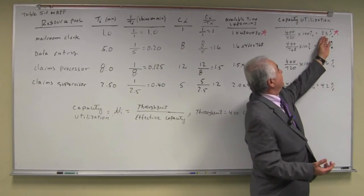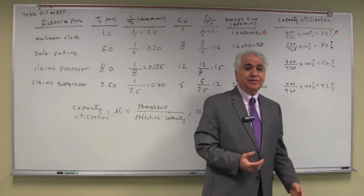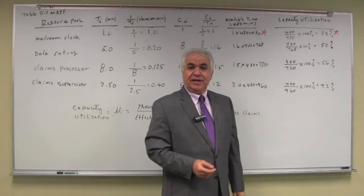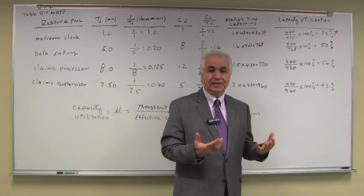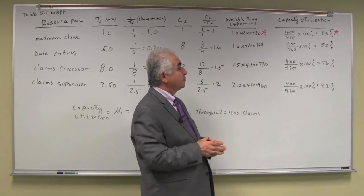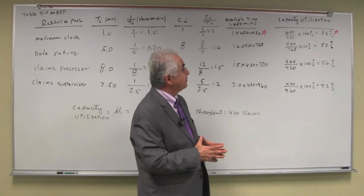the bare room clerk capacity utilization is 83% the highest. Hence the bottleneck step is the most utilized activity, most utilized step in the process.